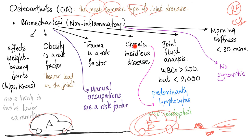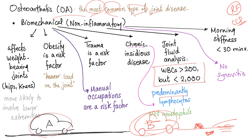Since osteoarthritis is wear and tear, it's a chronic and insidious disease — very slow, taking a lot of time. Since it's non-inflammatory, joint fluid analysis will give you a white blood cell count of more than 200 — because less than 200 is normal — but less than 2,000, because 2,000 or higher is inflammatory and osteoarthritis is non-inflammatory. White blood cells are between 200 and 2,000, predominantly lymphocytes because it's a chronic process.